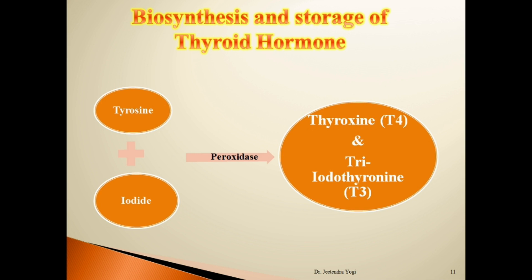In this slide we will see the biosynthesis and storage of thyroid hormone — a very important topic regarding the thyroid gland. Thyroid hormones in the form of thyroxine or T4 and triiodothyronine or T3 are synthesized from tyrosine and iodine with the help of an enzyme complex called peroxidase. Let's see the stages.